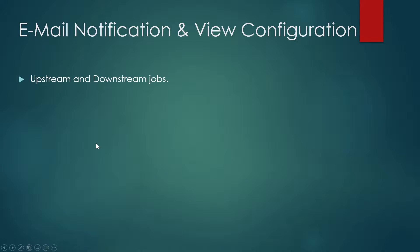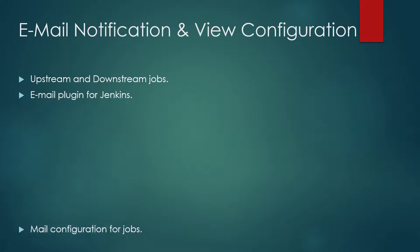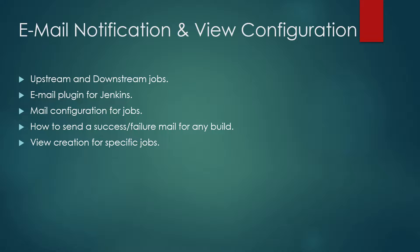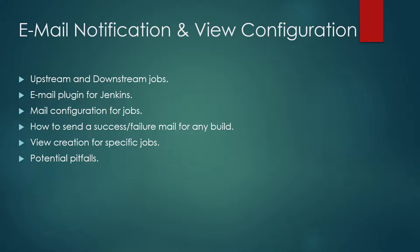We'll cover these points: first, how to create upstream and downstream jobs and how to configure them; second, how to install an email plugin for Jenkins; third, mail configuration for jobs; fourth, how to send a success or failure mail after any build. And then we'll talk about creation of specific jobs as views, and at the end, we'll talk about potential pitfalls.